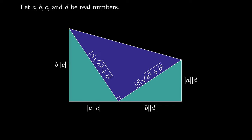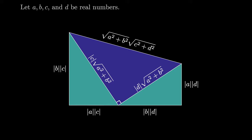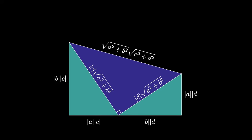Because this new triangle is also right-angled, we can use the Pythagorean theorem to find the length of the hypotenuse to be the square root of A squared plus B squared times the square root of C squared plus D squared.